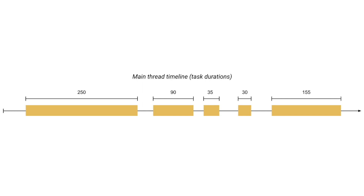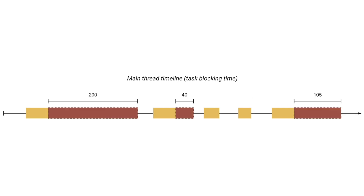Let me show you some visuals to help you understand in a better way. In this image, we see five tasks in the main thread. The first task takes 250 milliseconds, the second takes 90 milliseconds, the third takes 35 milliseconds, the fourth takes 30 milliseconds, and the fifth task takes 155 milliseconds. Now let's look at another image to understand which tasks are causing Total Blocking Time.